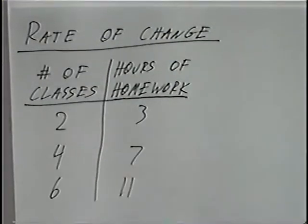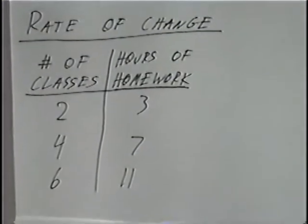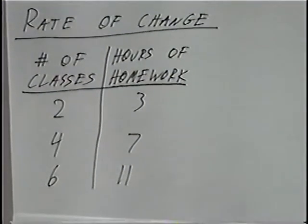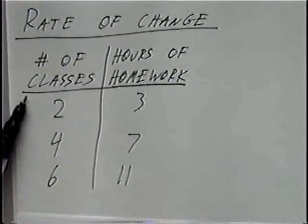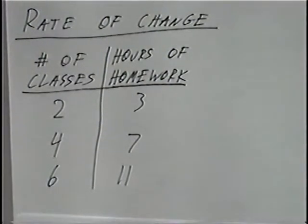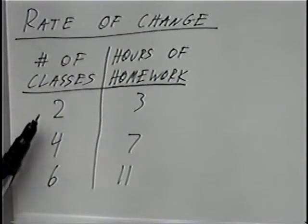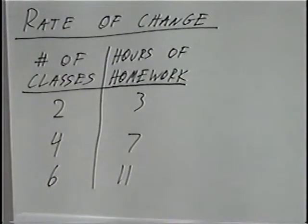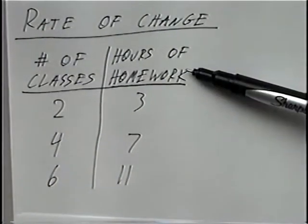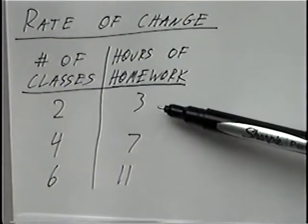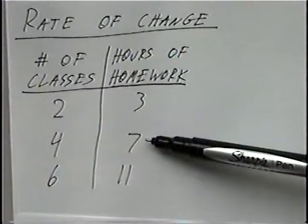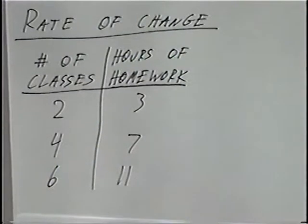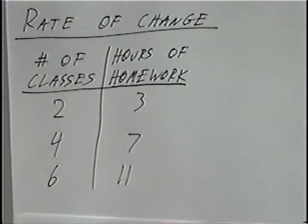The first problem: we have a table with three rows. The left side of the table is labeled number of classes — we have two classes, four classes, or six classes. The right side of the table is labeled hours of homework — we have three hours, seven hours, and eleven hours.